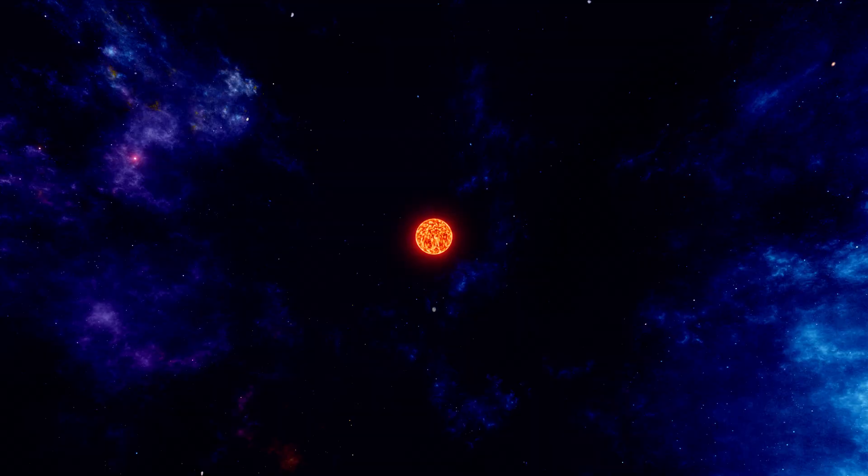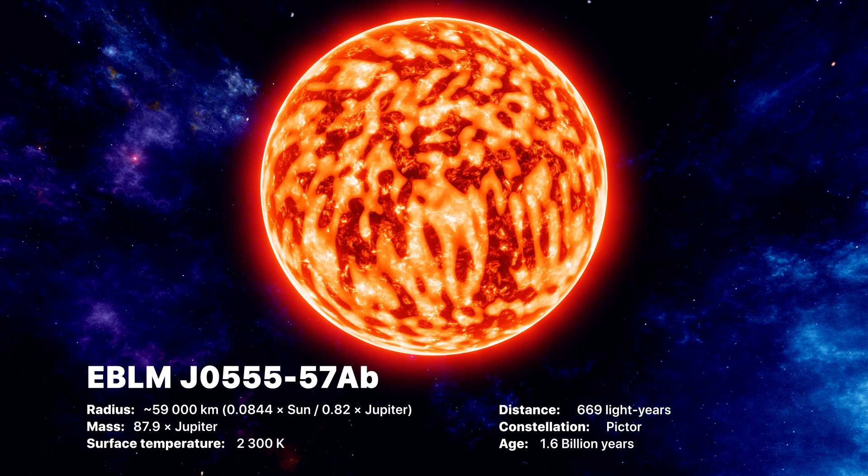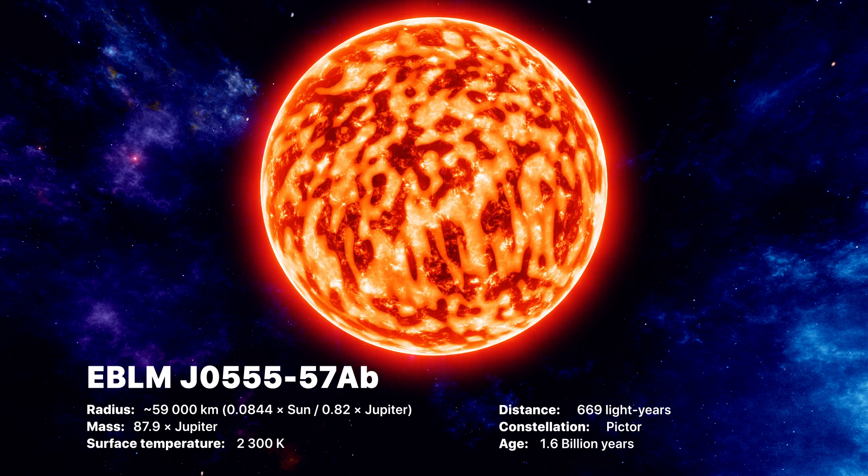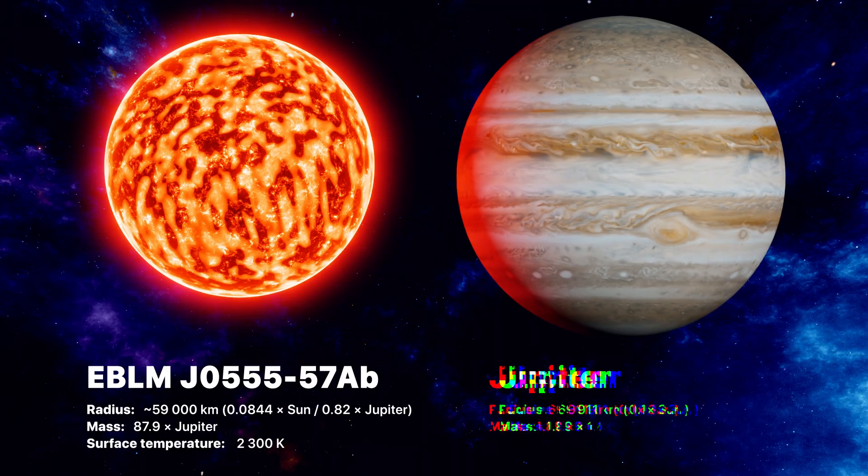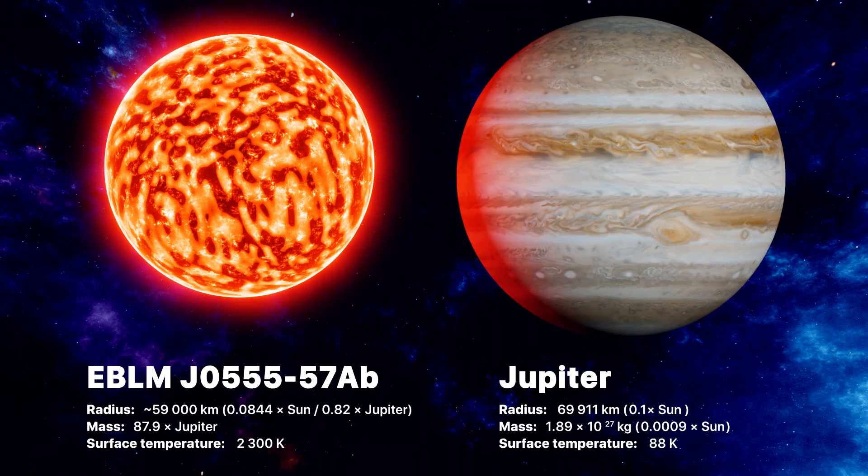So today's hero is the smallest star of 2025 that we know of. Meet EBLM JO555-57AB. Located roughly 669 light-years away in the constellation Pictor, this tiny red dwarf star is about the same size as Jupiter.